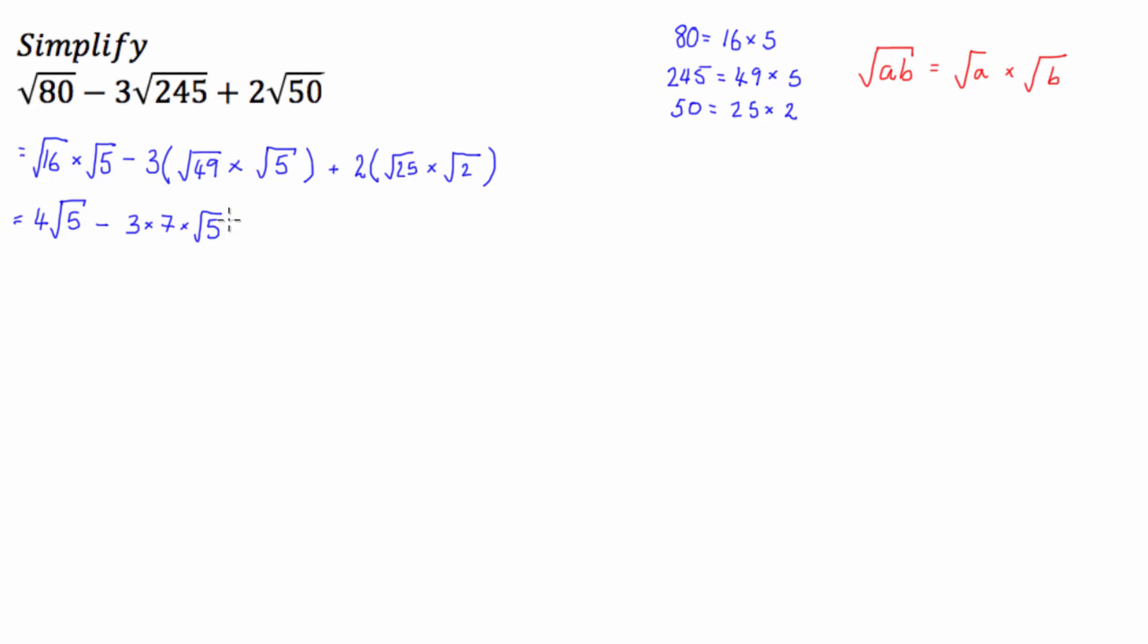Now, you could do all this in one step, but I'm just going through it the long way so you can get a grip of what's going on. So this is then added to 2 times the square root of 25, which is 5, times the square root of 2.